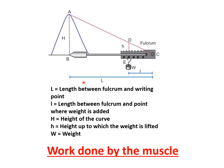The polygraph is used to measure the tension developed by the muscle during isometric contraction. Capital L is the length between the fulcrum and writing point, and small l is the length between the fulcrum and the point where the weight is added. Capital H is the height of the curve (AB), and small h is the height up to which the weight is lifted. W is the weight.